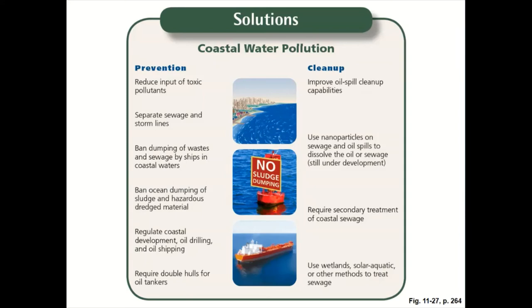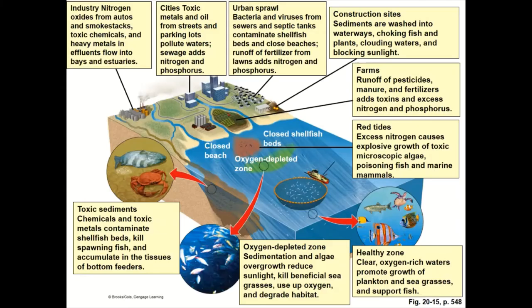We should require secondary treatment of all coastal sewage — not just one pass, but two passes — make sure it's clean before it goes into our waterways. Use wetlands, solar aquatic, and other methods to help treat the sewage, like those living sewage treatment plants we talked about. Residential areas, factories, and farms all contribute to coastal water and bay pollution. According to the United Nations Environmental Program, coastal water pollution costs the world $16 billion a year — that's more than $30,000 a minute due to ill health and premature death. I want you to stop and think about three changes you could make in your lifestyle that might help prevent some of this pollution.